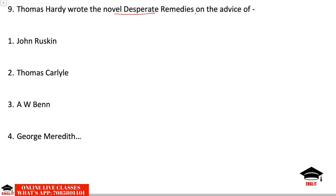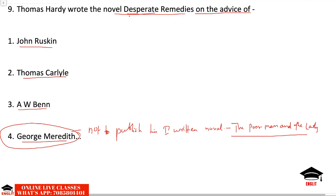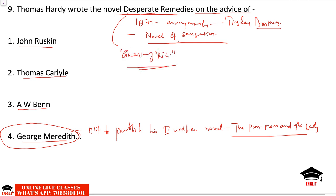Next question: Thomas Hardy wrote Desperate Remedies on the advice of whom — John Ruskin, Thomas Carlyle, A.W. Ben, or George Meredith? The correct answer is George Meredith — the same person who advised Hardy not to publish The Poor Man and the Lady, as it was too politically controversial and might damage Hardy's image. Desperate Remedies was published in 1871 anonymously by Tinsley Brothers. Critics described it as quasi-Gothic for its sensational theme.